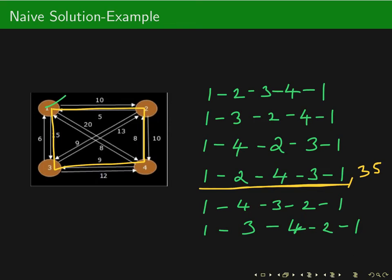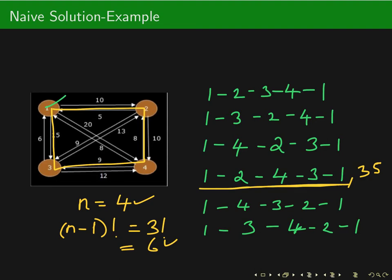In this example the number of vertices n was four, and we had to generate (n−1)! = 3! = 6 different permutations. Since the number of vertices was only four we had to generate only six permutations, calculate all the costs, and return the minimum. This becomes very difficult when the value of n is very large.